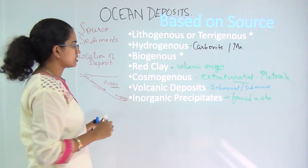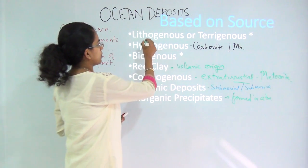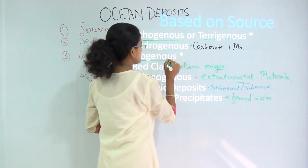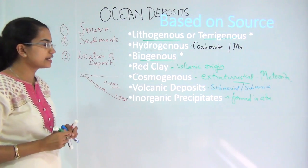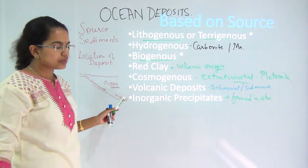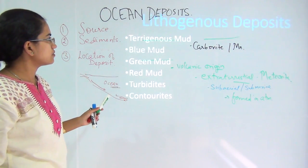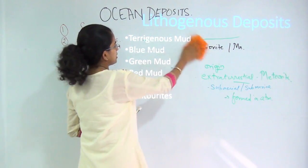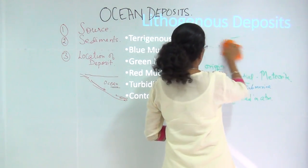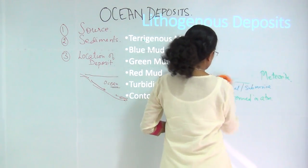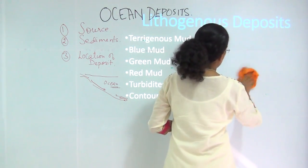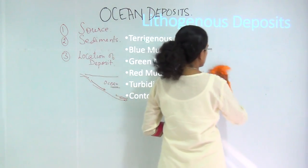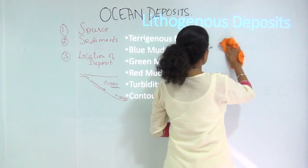Out of these, the two most important are the lithogenous or terrigenous deposits and the biogenous deposits, which we will be talking about in detail. Under lithogenous deposits, we have various kinds of mud: terrigenous mud, blue mud, green mud, red mud, turbidites, and contourites.